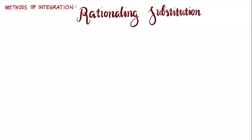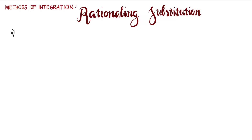In this video, we solve example number 7, showing how to evaluate an integral using the method of integration called rationalizing substitution or algebraic substitution. The given integrand is dx over 1 plus the cube root of x plus 1.